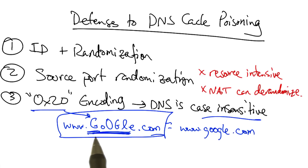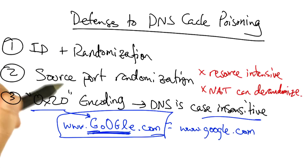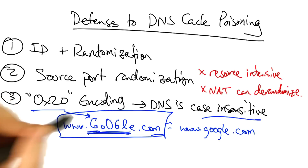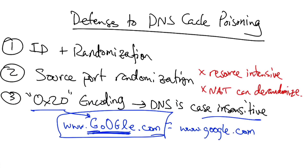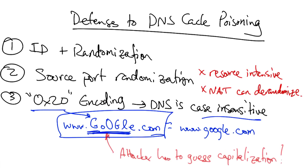Because no attacker would know the appropriate combination of upper and lowercase letters for a particular domain, it becomes even more difficult for the attacker to inject a bogus reply — because not only would the attacker have to guess the ID, but the attacker would also have to guess the capitalization sequence for any particular domain name.